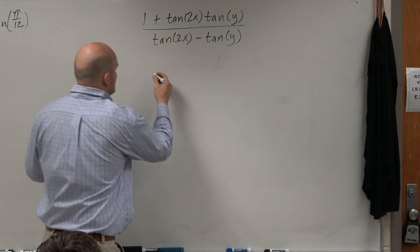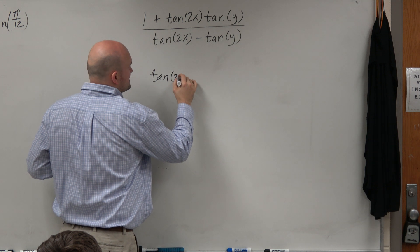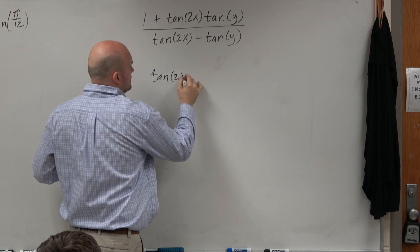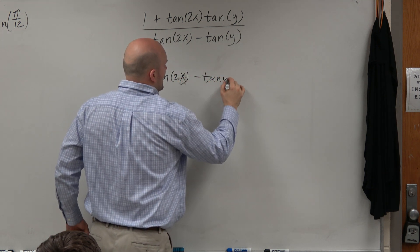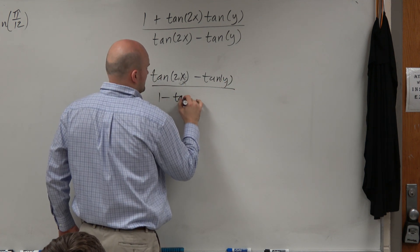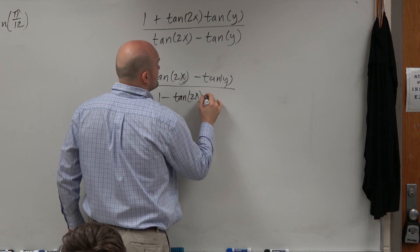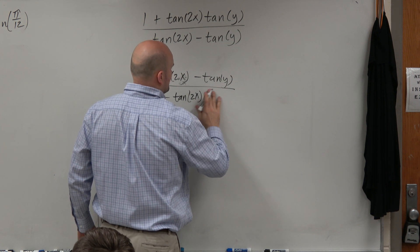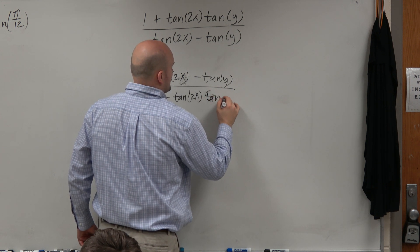Tangent is this. If it was written like this: tangent of 2x minus tangent of y, all over 1 minus tangent of 2x times tangent of y.